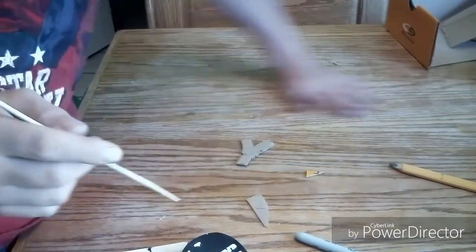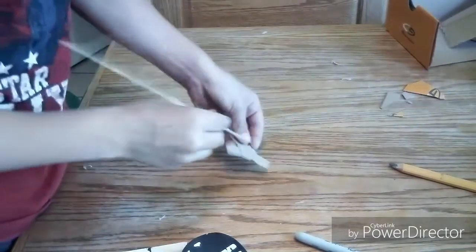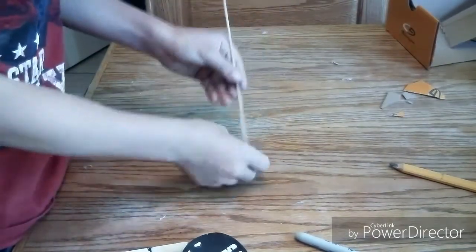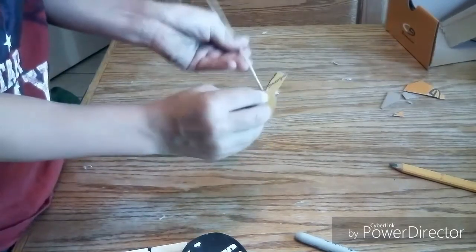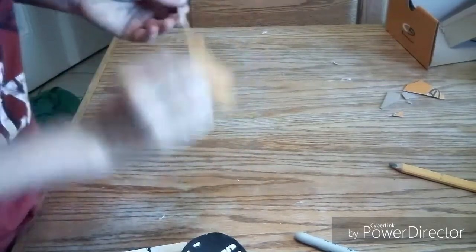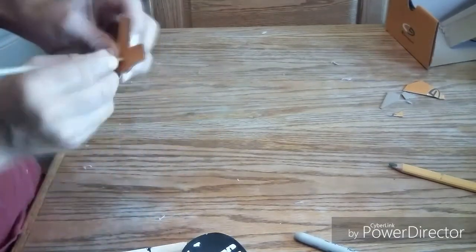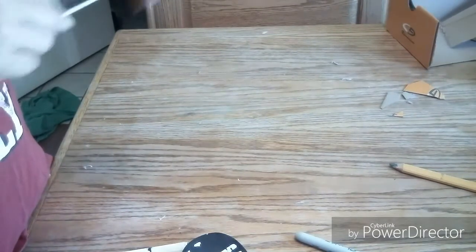All right, so now you're going to take your wooden skewer, you're going to try and find the center of your cardboard cutout fidget spinner, then you're going to try and poke it all the way through. It's going to be a little hard, but once you get the hang of it, it'll be a little bit simpler. So now, once you've got it through, you can see I struggled a little bit.